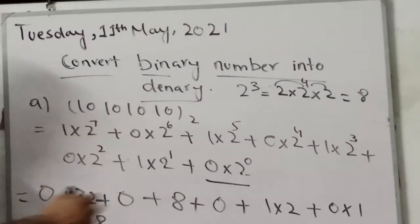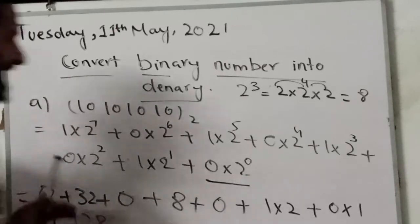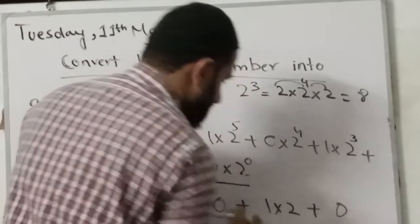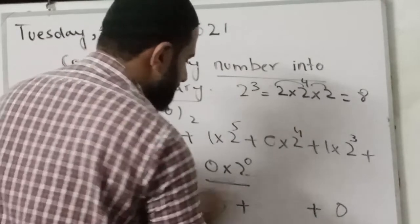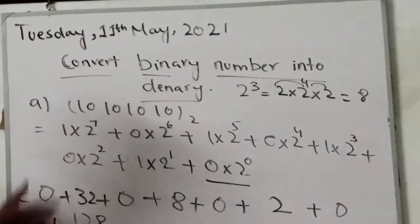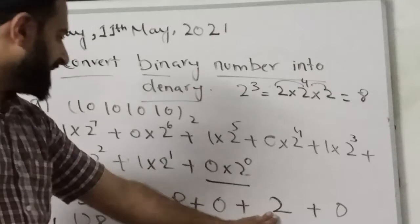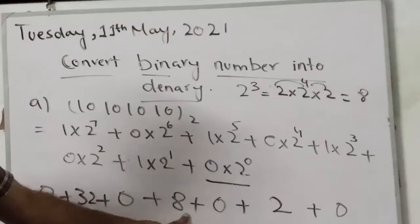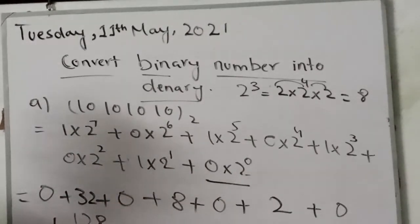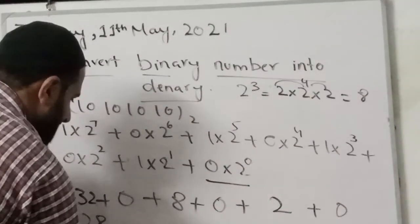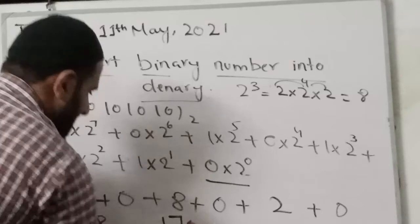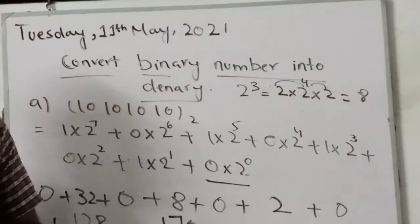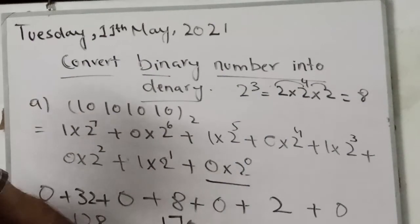Now you need to add all these numbers here. So here I will get 0. 0 multiplied with any digit will give you 0. So here I will get 2. Now you need to add all these numbers, and finally you will get the denary number. This is 8 plus 2 is 10, this is 42, 32 plus 10 is 42, 42 plus 128 is 170. I guess 170 is the answer. Here we have our denary number. I have converted this binary number into this denary number.